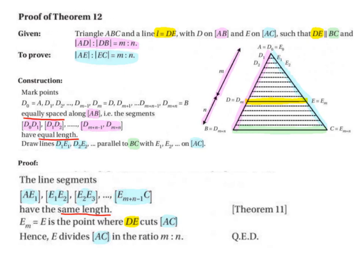Proof of theorem 12. I have highlighted the line L, which is also called DE, in yellow. AB in pink, AC in blue, and the line BC that's parallel to DE in green.